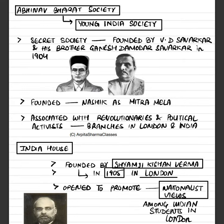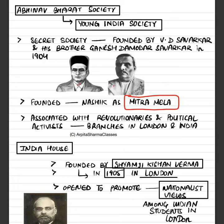The Abhinav Bharat Society, also known as the Young India Society, was established by Veer Savarkar and his brother Ganesh Damodar Savarkar — that is, Vinayak Damodar Savarkar and Ganesh Damodar Savarkar. In 1904, both of them together established this society in Nashik. Initially the name of this society was Mitra Mela, and it was associated with revolutionaries. That is why it was a secret society — revolutionaries and activists came together and made plans against the British.